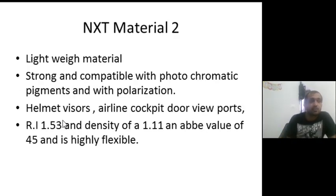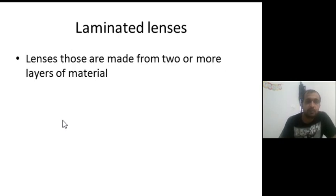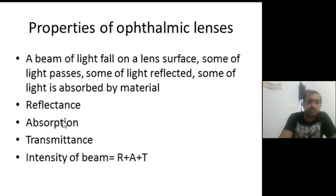NXT material is also now in practice. It is a lightweight material, strong and compatible with photochromatic pigments, polarization, helmet visors, airline cockpits, and door view ports. It has a refractive index of 1.53, density of 1.11, and Abbe value of 45. It is a highly flexible material. Laminated lenses are those made from two or more types of material.